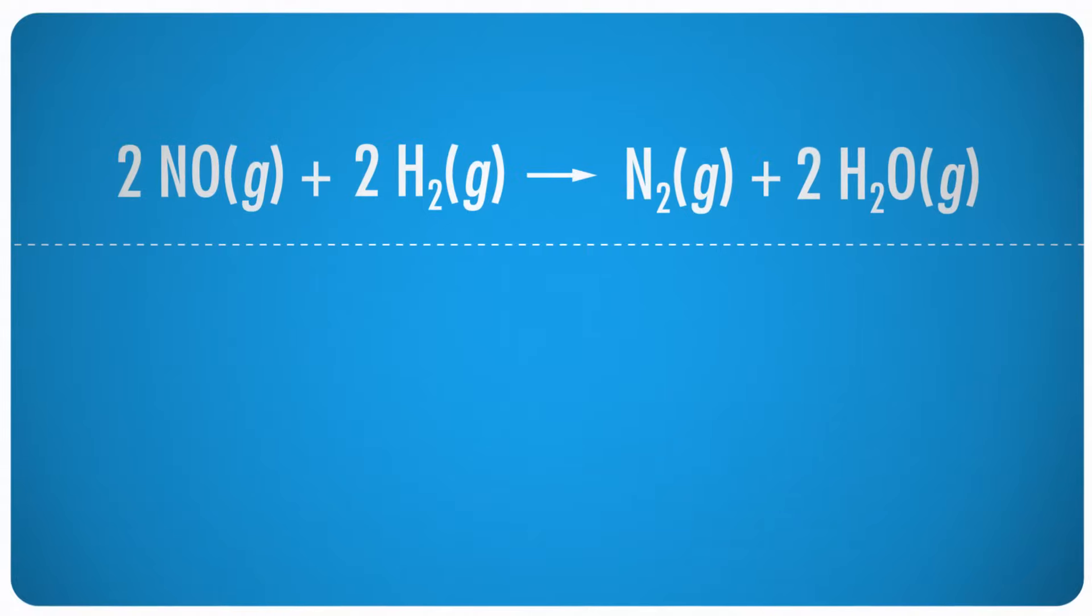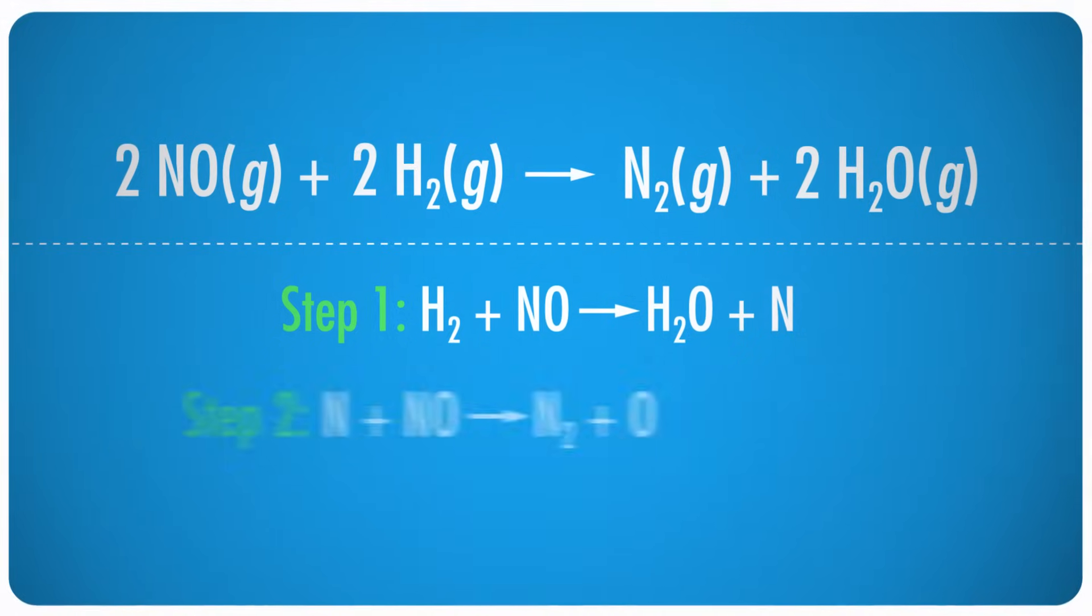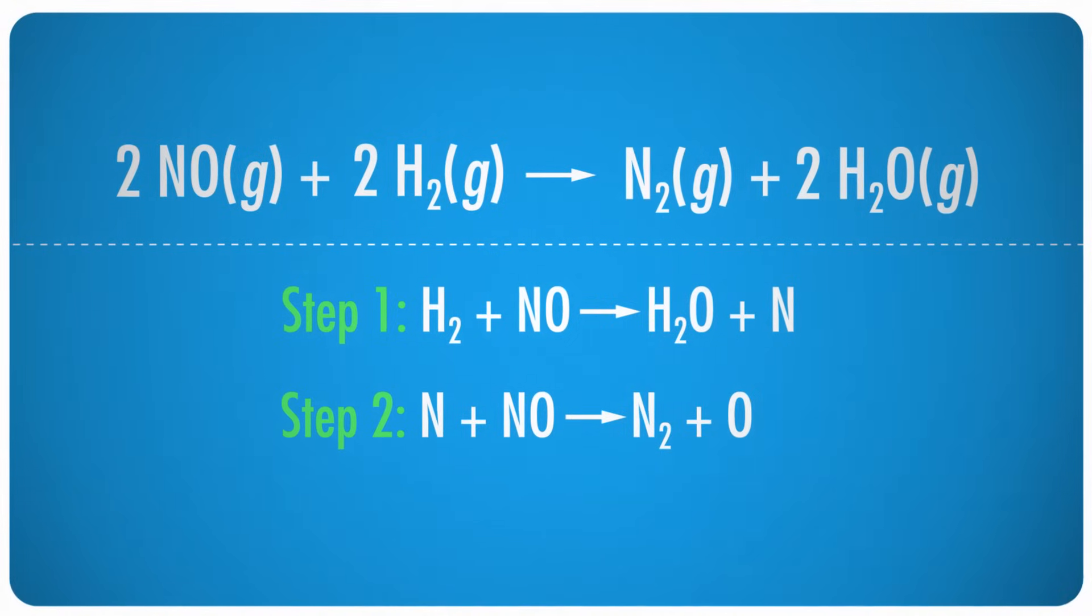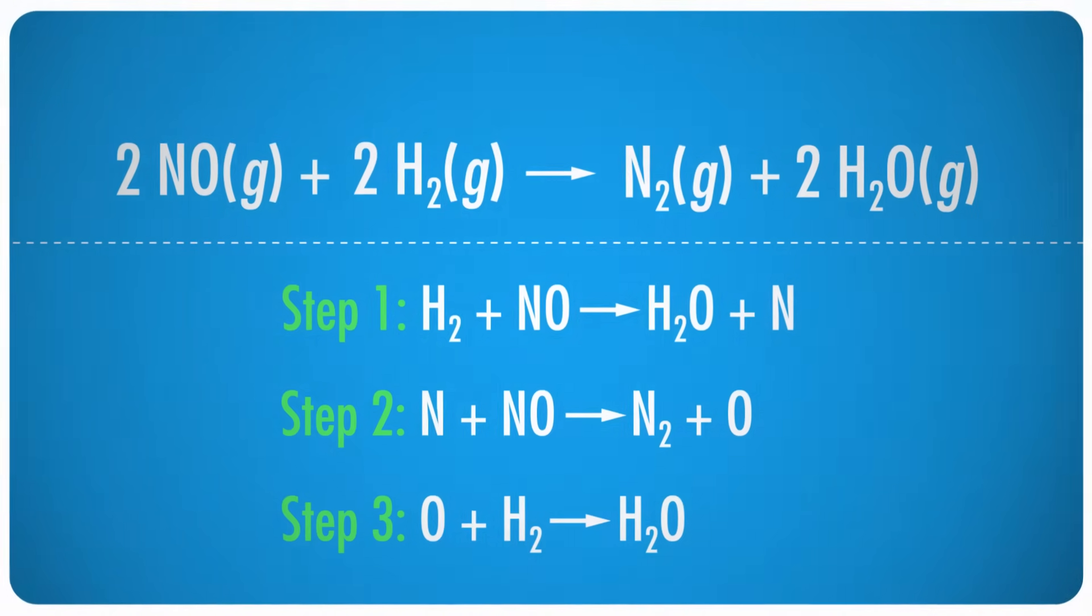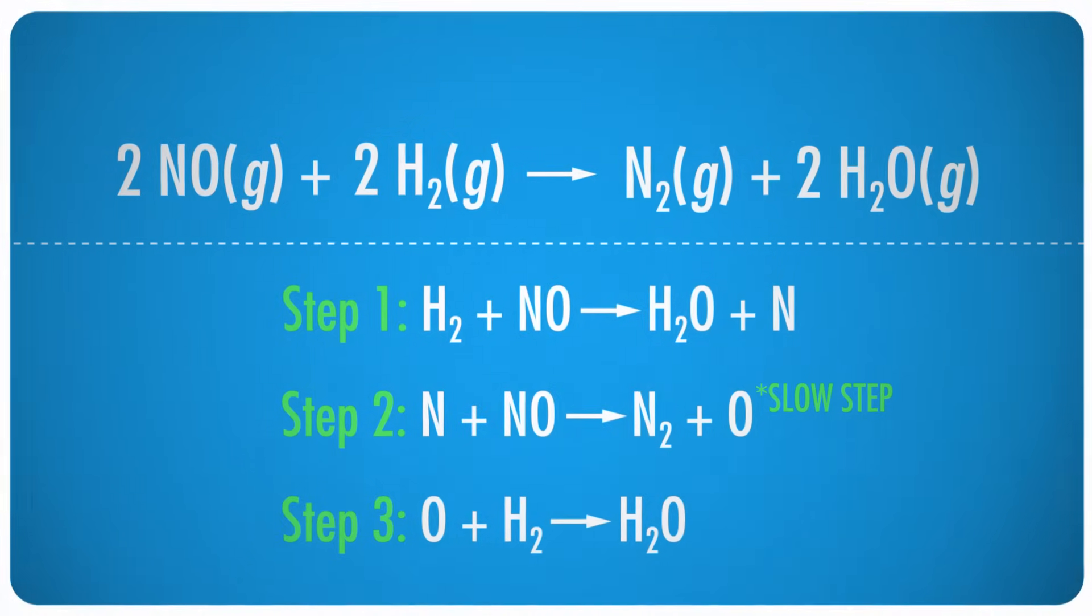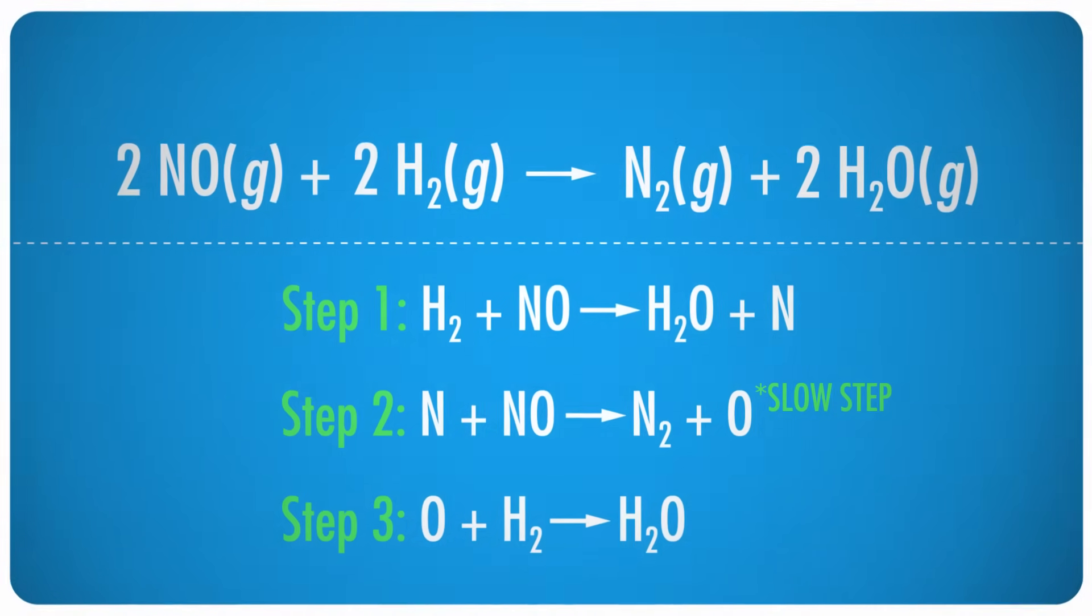So in the case of the nitric oxide reaction we've been discussing, there are actually three steps. First, the nitric oxide and the H2 form water and elemental nitrogen. Then the nitrogen combines with another molecule of NO to form N2 and elemental oxygen. Finally, that atom of oxygen combines with another molecule of H2 to form water. Here, step two is the slow one, and no matter how fast you take the first step, the water product can never be produced until the nitrogen gases. The problem is, we can't always afford to wait around for reactions to happen on their own.